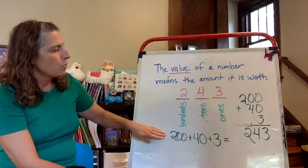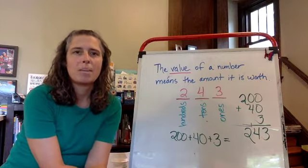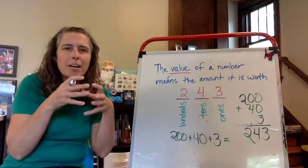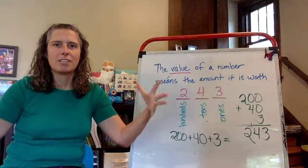So this is 243 written in expanded form. Another great way to think about expanded form is if you took that number and you kind of exploded it in a big way into all its different values.